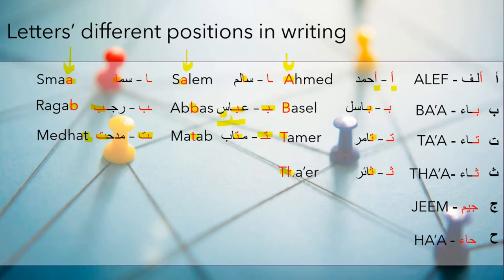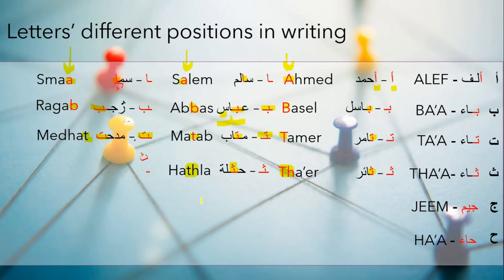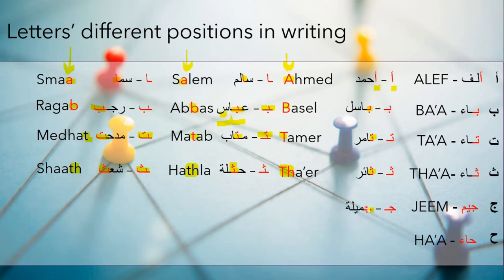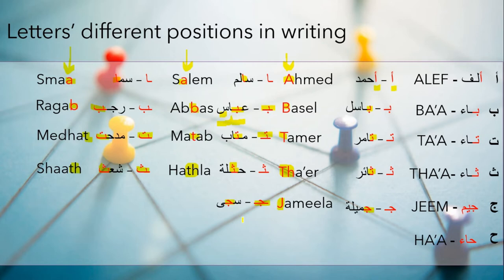The letter Tha — we repeat the same scenario. The most important thing to understand in this slide: whenever you see these letters — other than the special-case letters — we write them and connect them easily with the surrounding letters, both previous and next. Thair, Hathla — as you can see — and then Shath — the letter Tha is coming at the end — no issues; we are connecting it without any problem. The letter Jim — Jamila — Jim is connected to the next letter Mim, and Ya is connected to the next letter Lam.